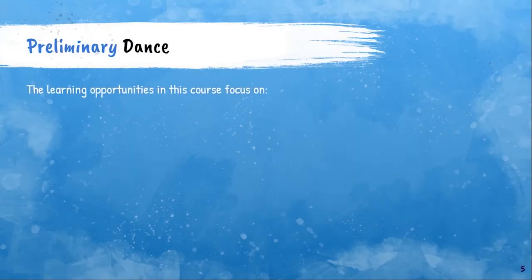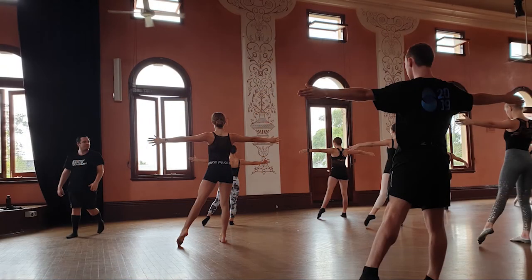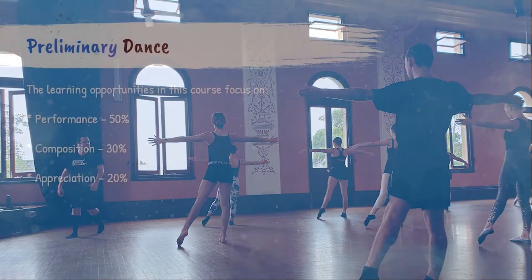The preliminary Dance course has three learning focus areas. Performance is worth 50% of their mark, covering dance technique and performance quality. Composition is worth 30% of their mark — students compose through the elements of dance, learning to use a stimulus to develop a concept and intent. Appreciation is worth 20% of their mark — students research the development of dance in Australia and have an introduction to dance analysis.